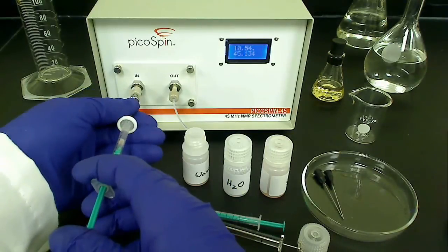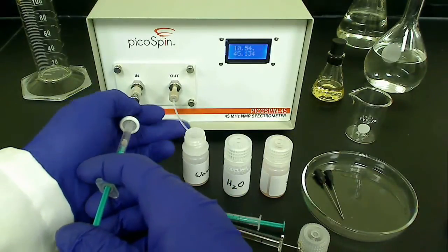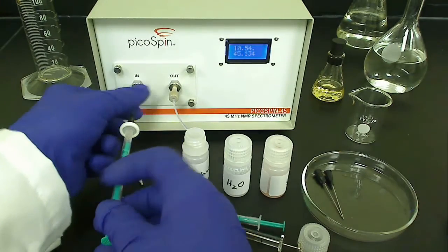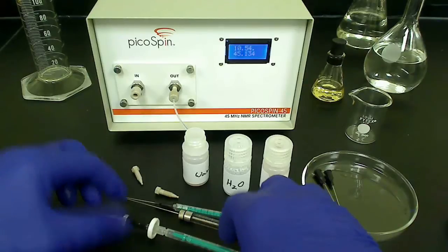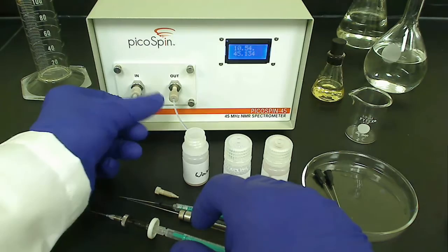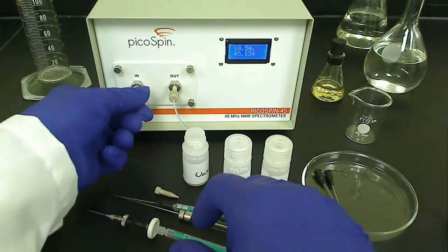Draw up a sample like before, but include a little more volume, approximately 0.3 to 0.4 milliliters, to account for the additional dead volume introduced by the syringe filter. Attach the syringe just as before, inject the sample, cap the inlet, and perform the experiment.